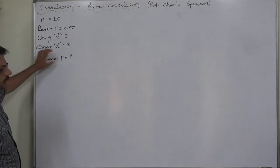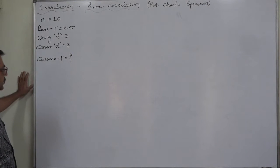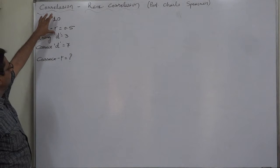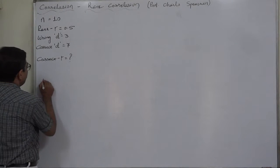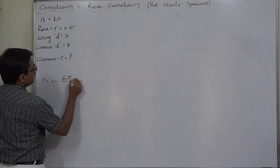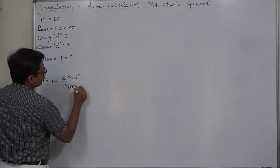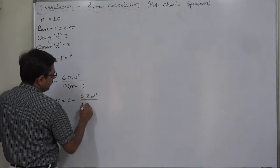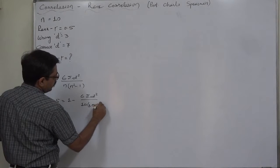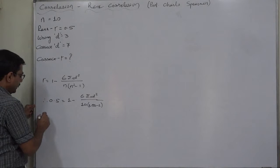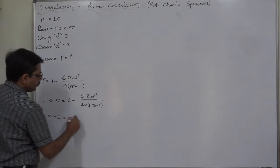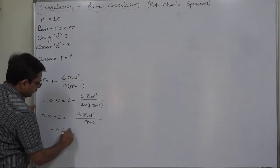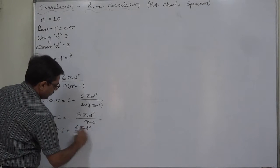To find the correct value of the coefficient of rank correlation, we first need to find the wrong value of sigma d² based on the available data. Writing the formula: the coefficient of rank correlation equals 1 minus 6·sigma d² divided by n(n²−1). Therefore, 0.5 = 1 − 6·sigma d² / (10 × (100−1)), which gives 0.5 − 1 = −6·sigma d² / 990, so −0.5 = −6·sigma d² / 990.